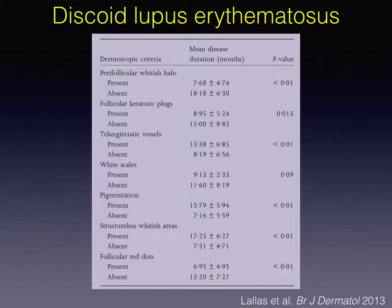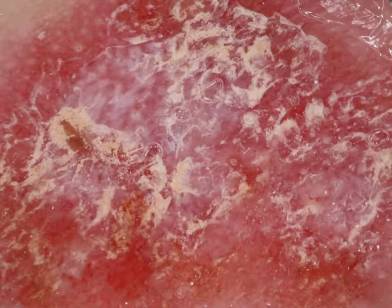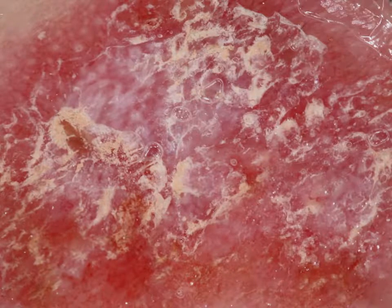The dermoscopic appearance of discoid lupus erythematosus is time-related, mirroring the underlying histopathologic changes with disease progression. At an early stage, dermoscopy reveals perifollicular whitish hollows and some follicular plaques. Afterwards, the hyperkeratosis becomes more intense, but perifollicular hollows and follicular plaques can still be seen in the uncovered parts of the lesion. Later, telangiectasias appear, while the fibrosis is not only restricted around the follicles but starts to become more diffuse.